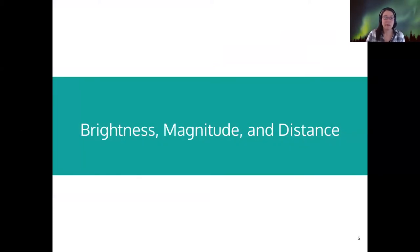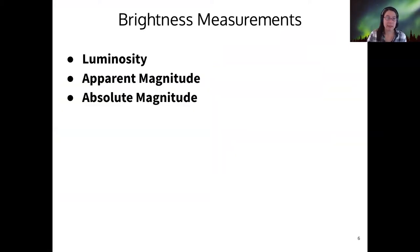All right, so starting out with the ideas of brightness, magnitude, and distance, there are three brightness measurements that we'll talk about today. These are luminosity, apparent magnitude, and absolute magnitude. So I'll define these one at a time, but I'll keep coming back to the idea of these three, and by the end of class you should be able to compare and contrast these, and then tell me how they work together to be able to measure distance.